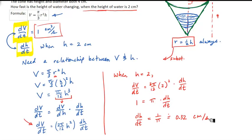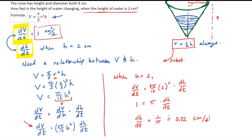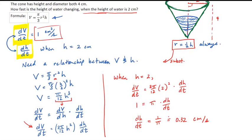So you'd want to write a therefore sentence here, and your therefore sentence would say something along the lines of, at the moment when the height of water is 2 centimeters, the height of water is changing at the rate of 0.32 centimeters per second.